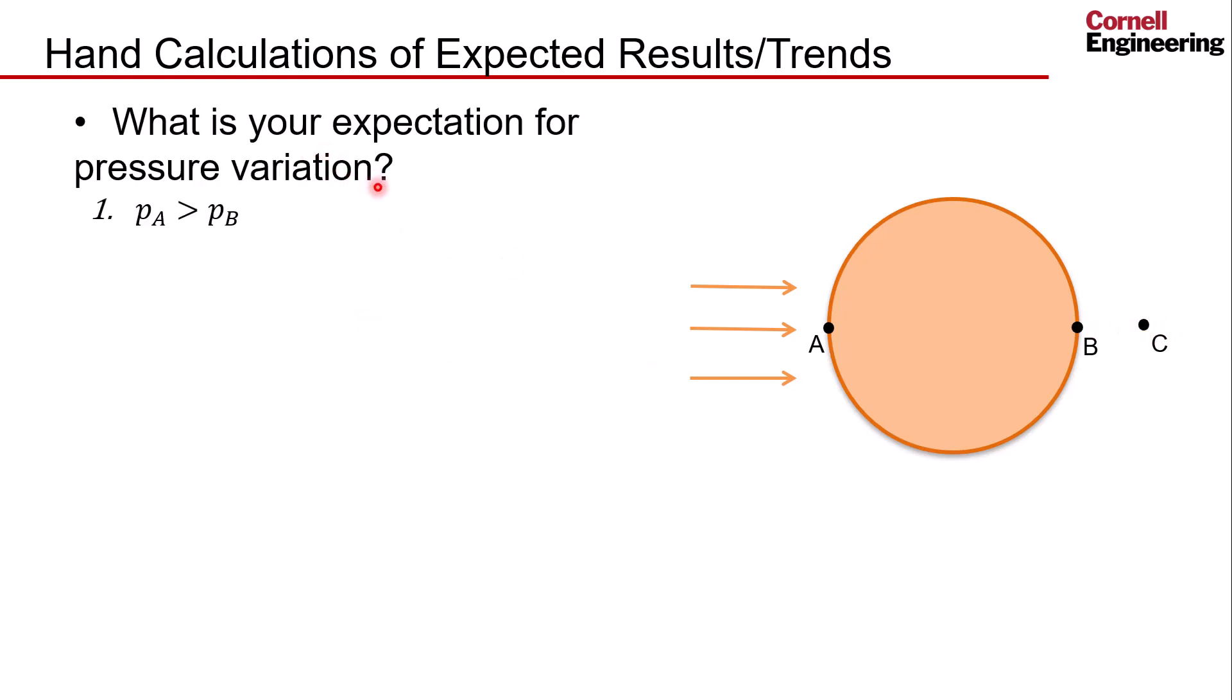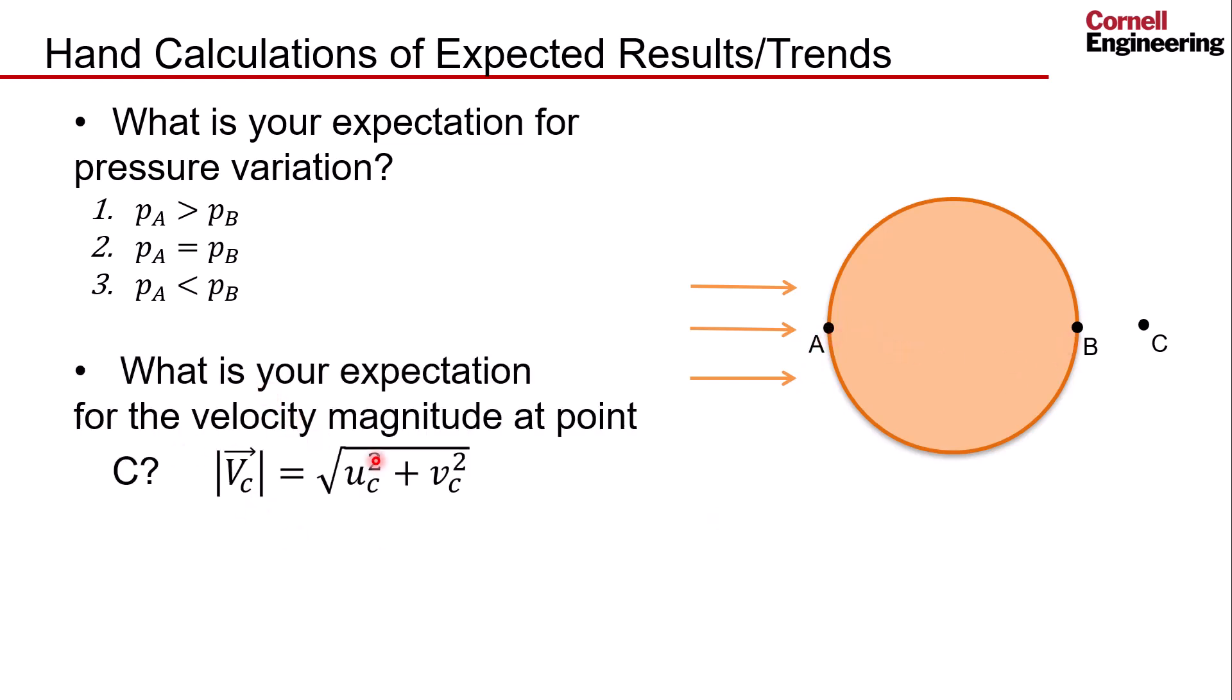What is your expectation of the pressure variation? Would you expect the pressure at A to be greater than B, or them to be equal, or would you expect pressure at A to be less than B? Similarly, what is the expectation of the velocity magnitude? The velocity magnitude can be calculated by squaring the velocity components, adding them, and finding the square root. So would the velocity magnitude at C be greater than the free stream velocity, equal to it, or less than it? Think about these and you can check the Fluent results against your expectations.